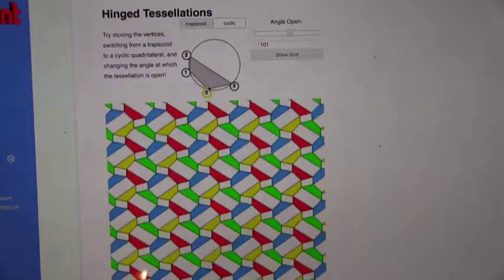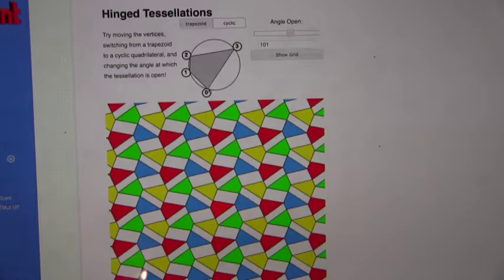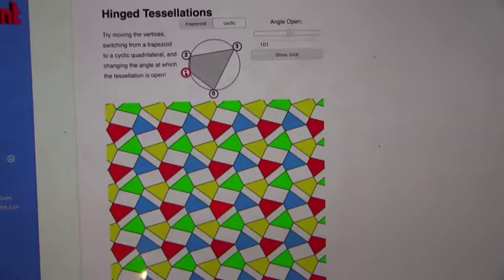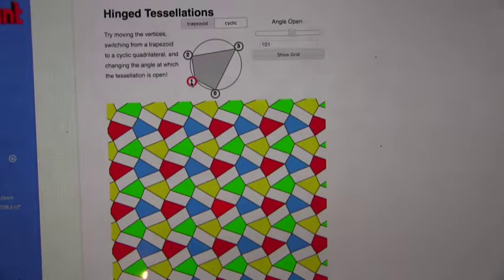You can almost see the circles. If I make it like a kite. If I make it like these, look like kite quadrilaterals.